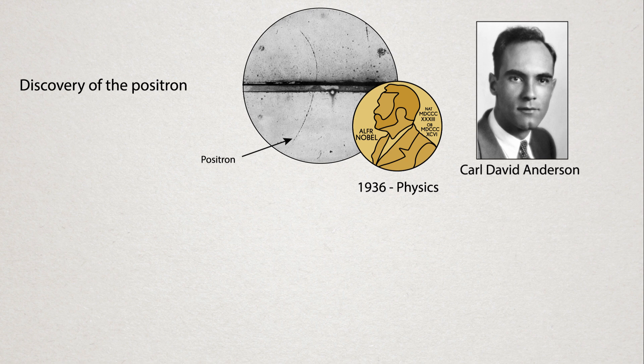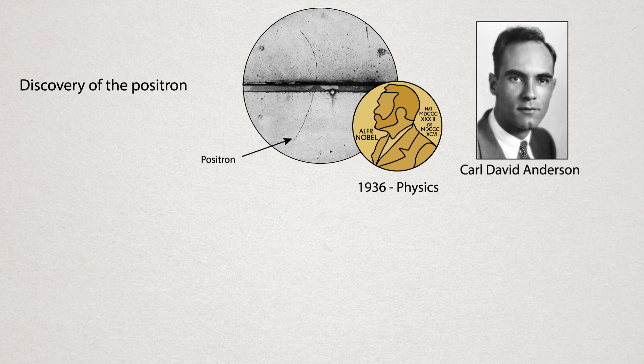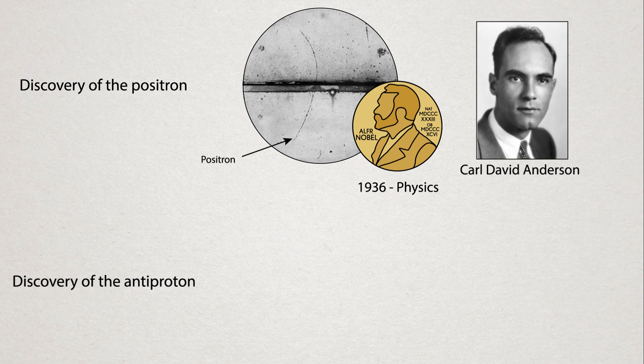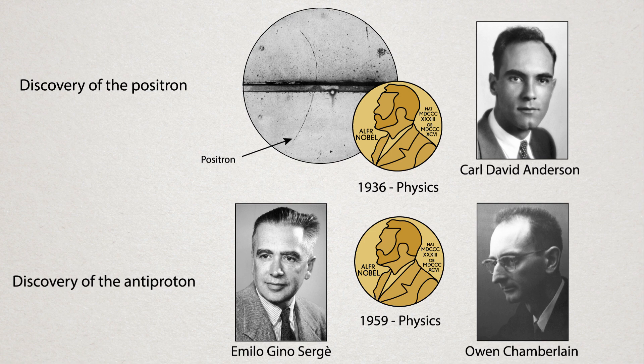Later on, in the 1950s, the first anti-proton was discovered by two scientists, Emilio Segrè and Owen Chamberlain, for which they won the 1959 Nobel Prize in Physics. And finally, in 1995, the CERN collaboration showed that they were able to combine these two antimatter particles to make anti-hydrogen.